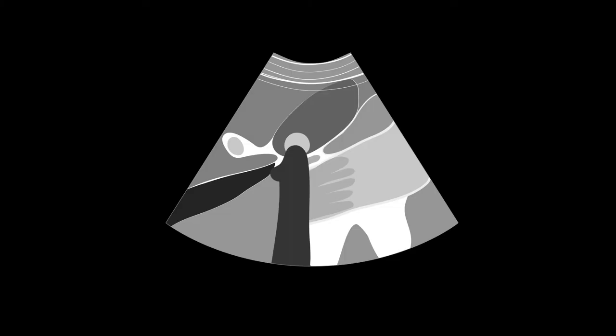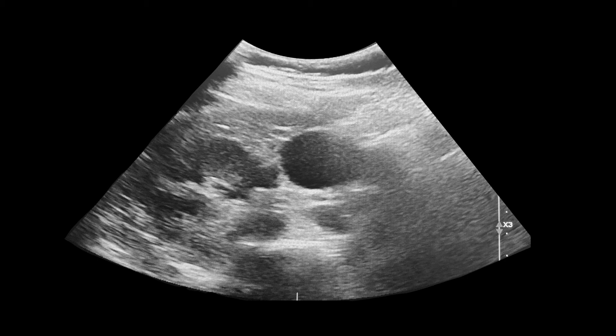The findings on ultrasound that indicate cholecystitis are gallbladder wall thickening equal to and greater than 4 mm, pericholecystic fluid and wall edema, sometimes called a double wall sign, and gallstones, which will be seen as acoustic shadows. Here is an example of a patient's gallbladder ultrasound in a transverse plane. You can see acoustic shadows representing gallstones.